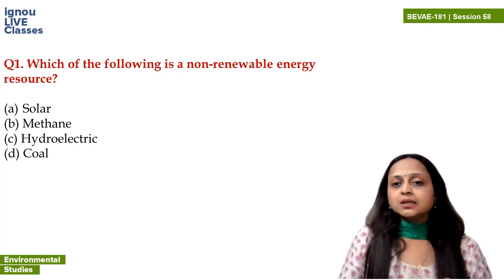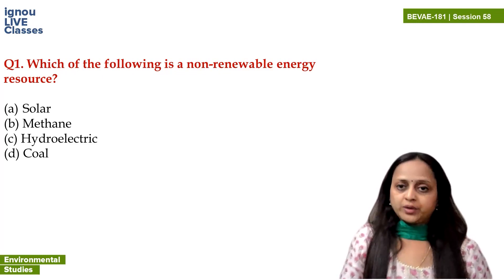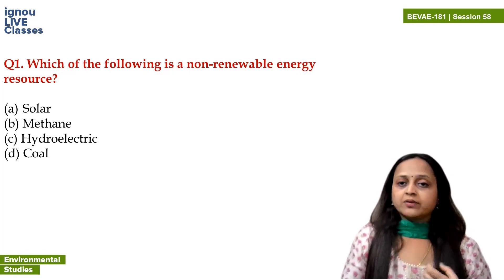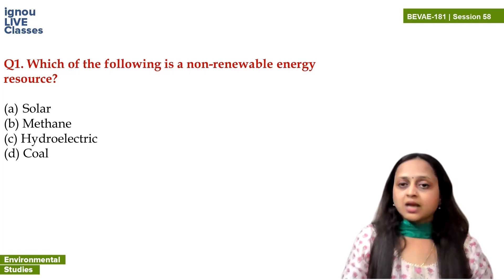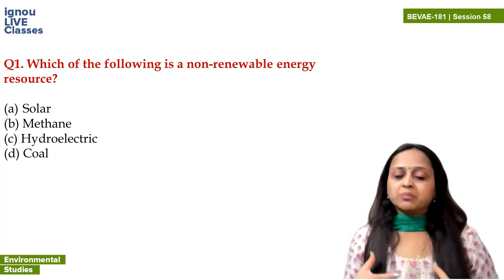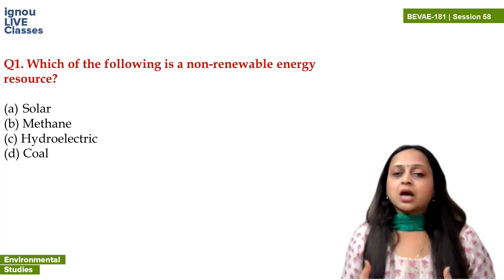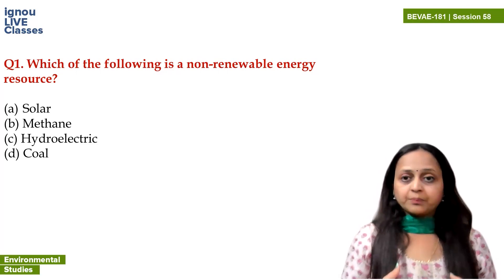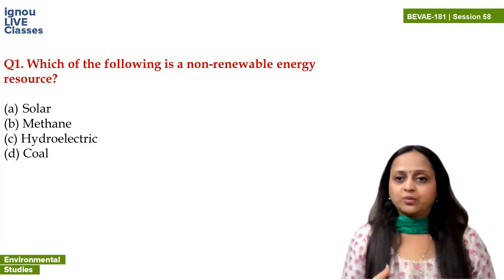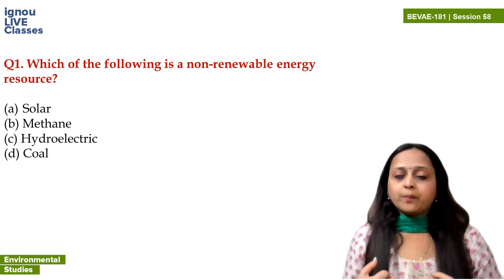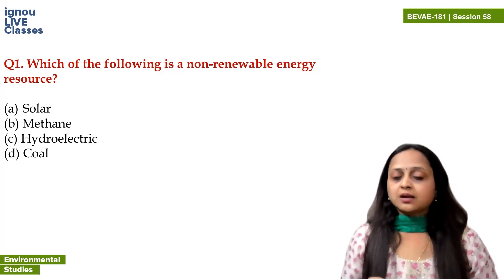Methane — where do we get methane from? It is the main component of biogas. Biogas means when we extract gas from living components. When your waste or organic matter, or your solid waste, undergoes anaerobic degradation — anaerobic means in the absence of oxygen — biogas is produced. Today people are even producing biogas at home and using it for cooking purposes. So the main component of biogas is methane.